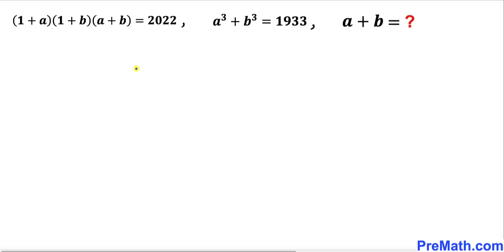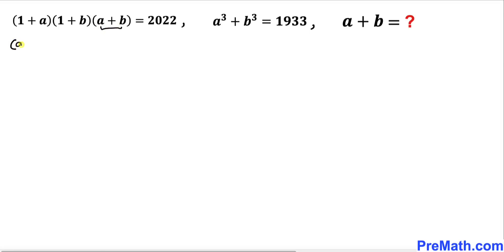Let's get started with the solution. The very first step: let's focus on these two factors and multiply them out using double distribution. Writing out the factor a+b, and multiplying the two factors, we get 1 + a + b + ab.